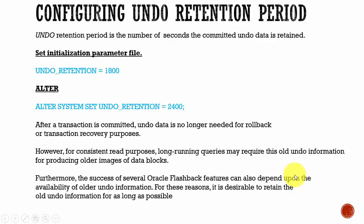In this session let's learn about undo retention period. The undo retention period is the number of seconds the committed undo data is retained. The parameter for that is undo_retention. In our example we are setting it to 1800, which means the undo data is stored for at least 1800 seconds.